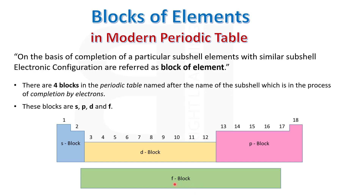Whereas F block lies at the end of the periodic table. There are two series in F block — the Lanthanide series and the Actinide series. Today we will only start discussion on S block and P block. So let's have a look at S block elements.